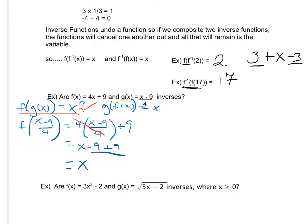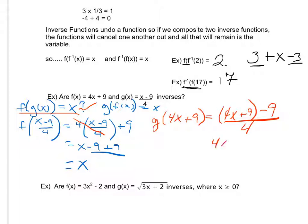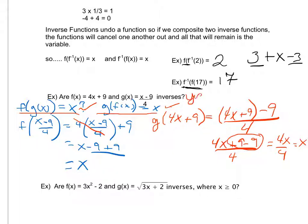I also have to check the second one: does g of f of x equal x? That means I have g of 4x plus 9, which means I'm going to plug 4x plus 9 into my g function. I always plug in with parentheses, so I have 4x plus 9 minus 9 over 4. Since there's nothing to distribute, I get 4x plus 9 minus 9, all over 4. The 9s cancel to 0, leaving me with 4x over 4. My 4s cancel out, leaving me with just x. So g of f of x equals x — yes. Since both held true, f of x and g of x are inverses, because the functions undid each other.